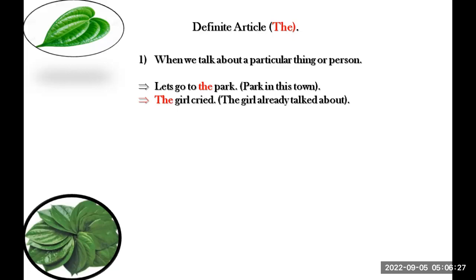Article 'the' has ten usages. Today we will cover all ten usages. These are enough — if you know all these ten usages of article 'the', that is sufficient. The first usage is when a particular thing or particular person has been represented to us. For example: 'Let's go to the park', 'The girl is crying.'